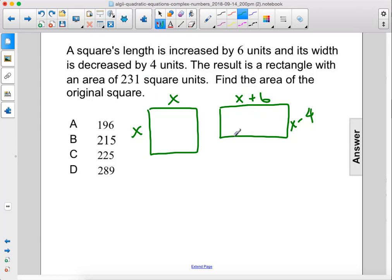The new area of this rectangle is 231 square units. So we have x plus 6 times x minus 4 equals 231.